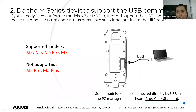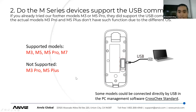To connect via USB, you just connect the USB port to any computer. The USB also provides power to the device, so you don't need a separate power supply. Once connected to the computer, you can add the device directly in CrossCheck Standard software to manage users and records. For newer models like M3 Pro and M5 Plus, you should connect via LAN or Wi-Fi instead.